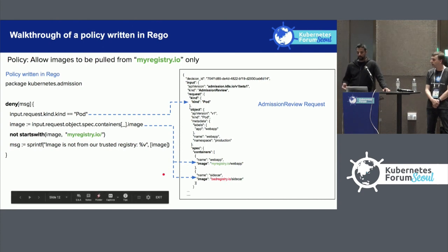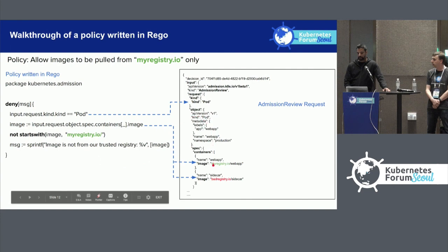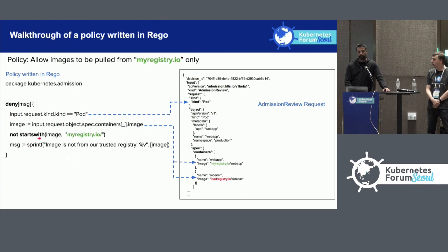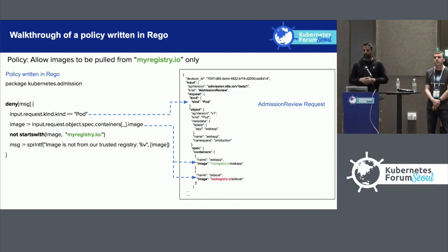In the example, image will be an array of both images: myregistry.io/webapp and badregistry.io. We then check — does each image start with myregistry.io? Since the second one doesn't, it will not be allowed and will be denied. The developer would get an error message, which we'll look at in a couple of minutes.